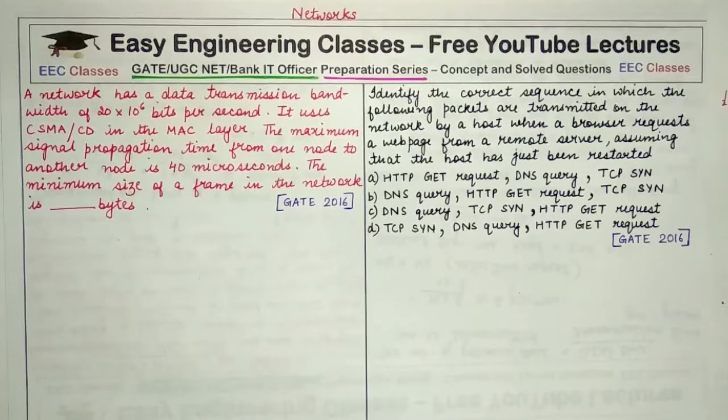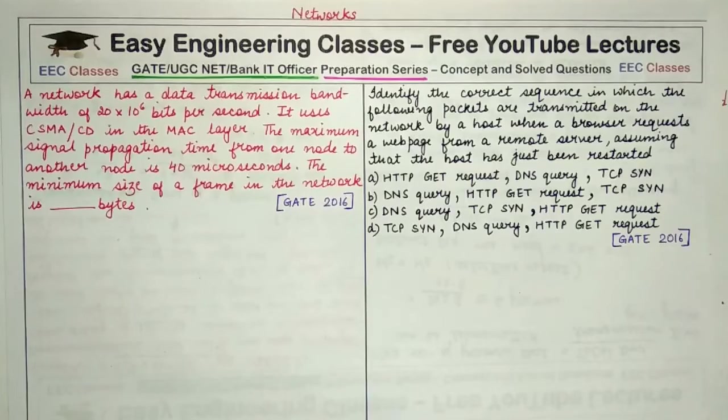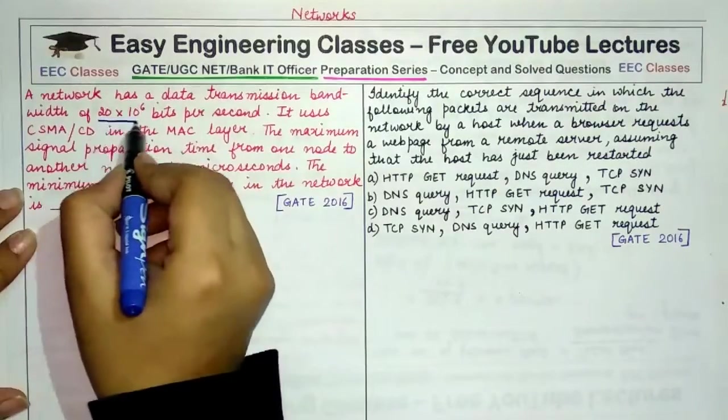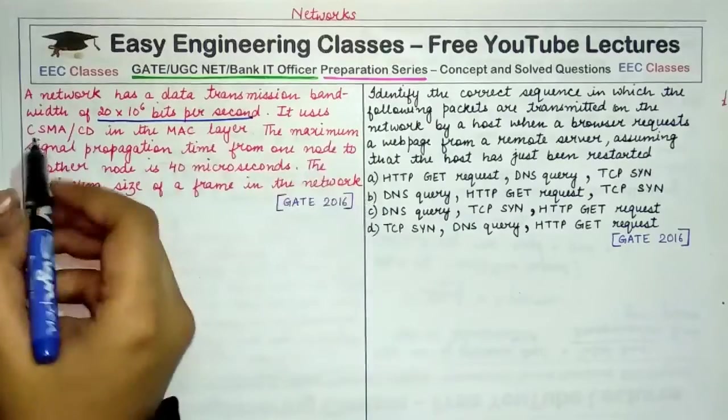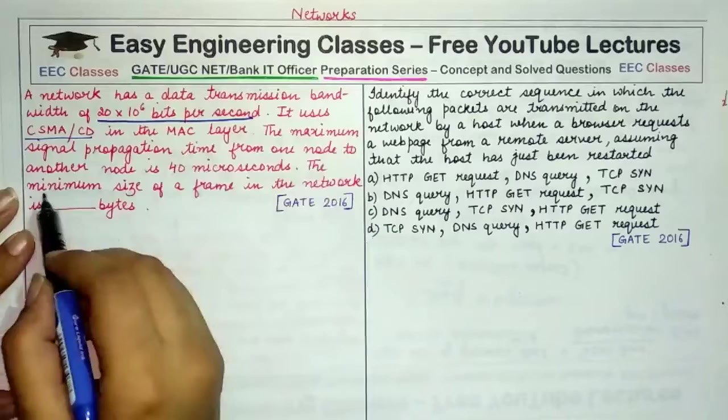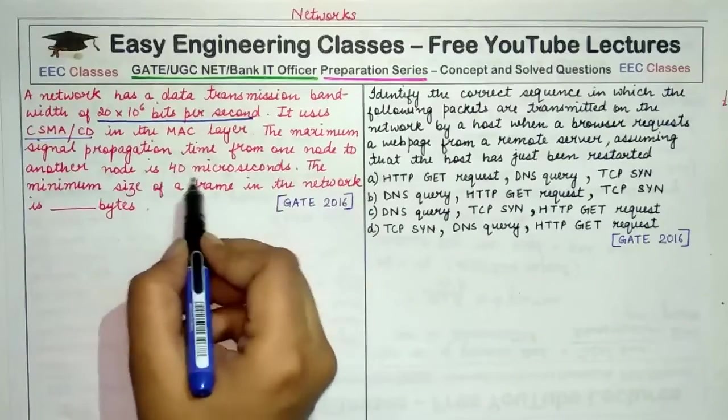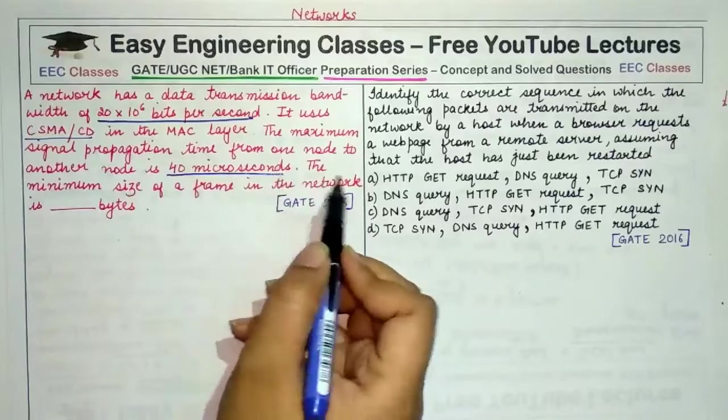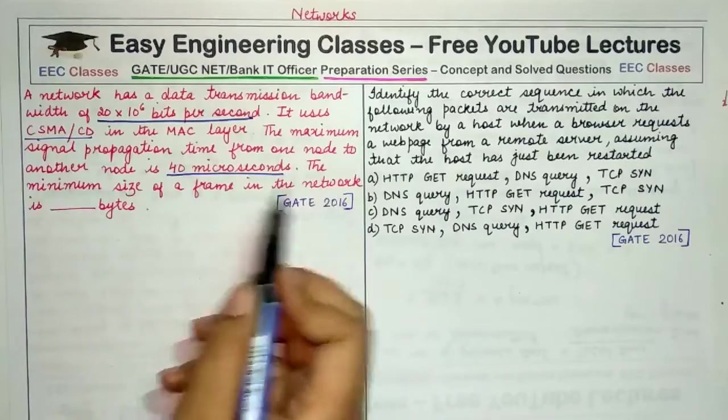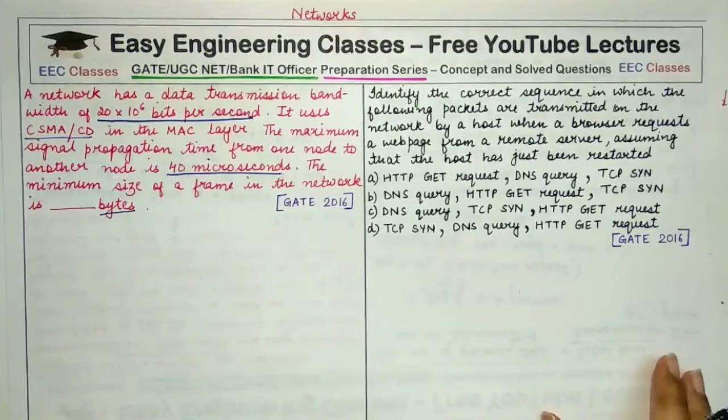The question is: a network has a data transmission bandwidth of 20×10^6 bits per second. It uses CSMA/CD in the MAC layer. The maximum signal propagation time from one node to another node is 40 microseconds. The minimum size of a frame in the network is these many bytes.